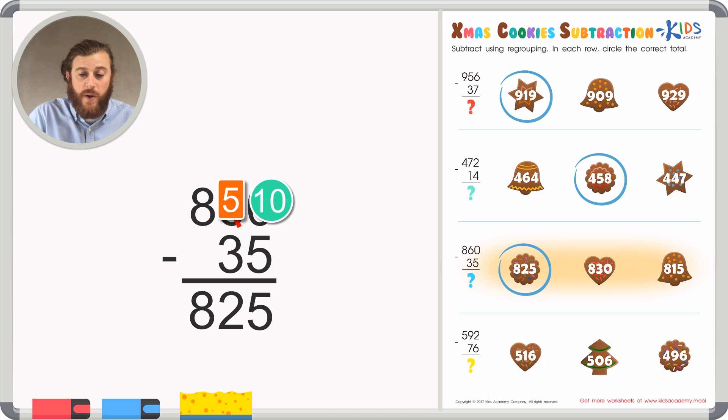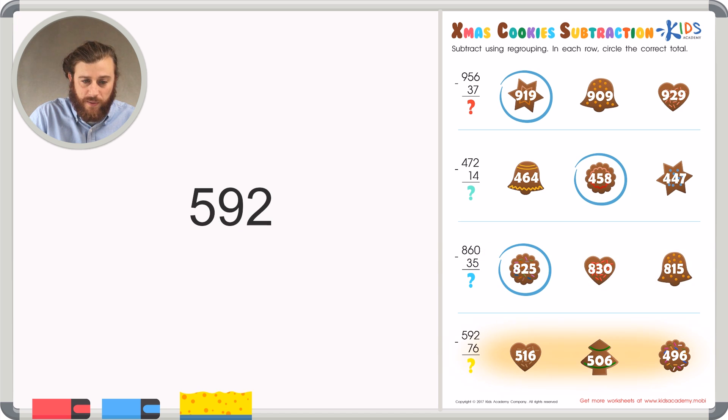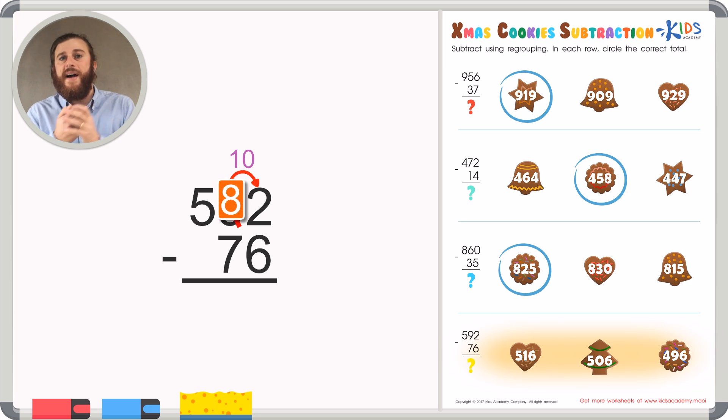And finally, we have 592 minus 76. In this problem, again, the top ones place number is smaller than the bottom ones place number. We're going to have to borrow from the tens place. But he doesn't mind. He's got plenty to give. Let's take away one 10 from 9, which is really representing 90. And turn it into 8, which now will represent 80. We'll take that 10 and give it to the 2 in the ones place. Making 2 a 12.